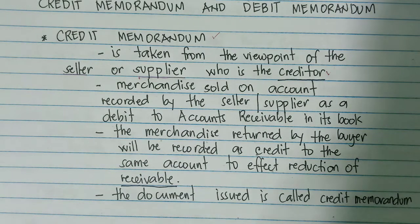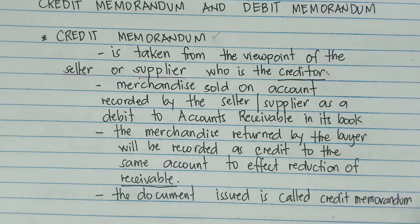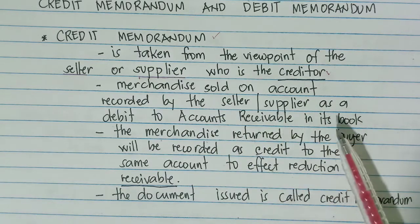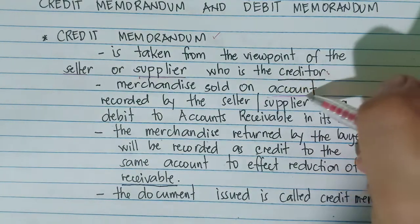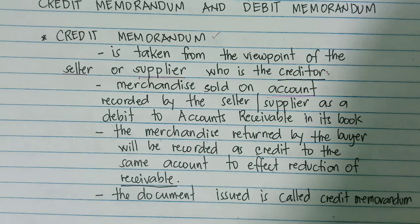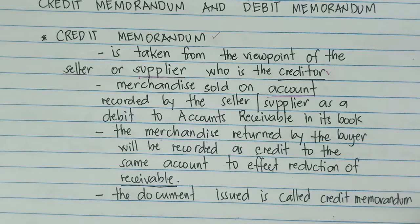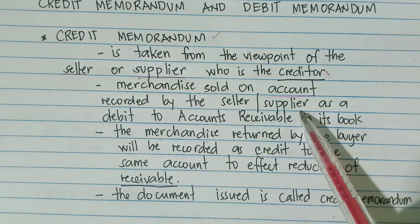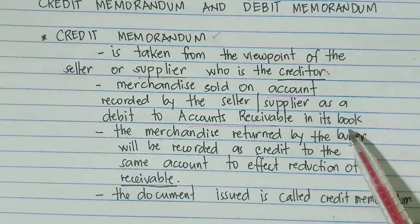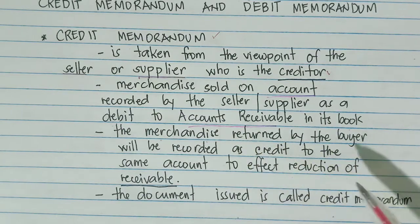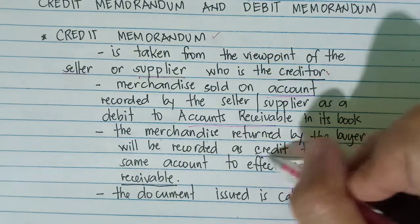Merchandise sold on account is recorded by the seller or supplier as a debit to accounts receivable in its book. If the seller or supplier sold merchandise on account — meaning the merchandise was sold but not paid in cash — the seller or supplier will record accounts receivable in its book. The merchandise returned by the buyer will be recorded as a credit.